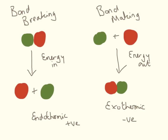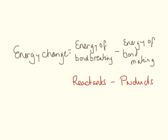So just to recap: bond breaking requires energy to be put in — this is an endothermic process and has a positive value. Bond making releases energy — this is an exothermic process and has a negative value. When working out the energy change for a reaction, it is the energy of bond breaking minus the energy of bond making — the reactant side minus the product side.